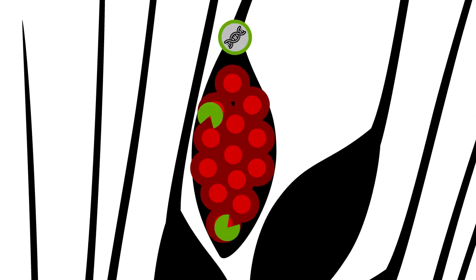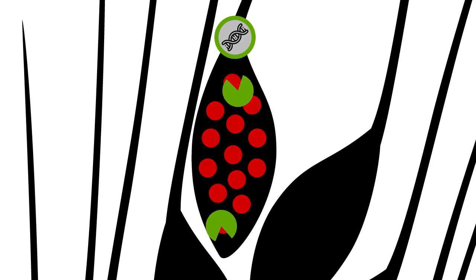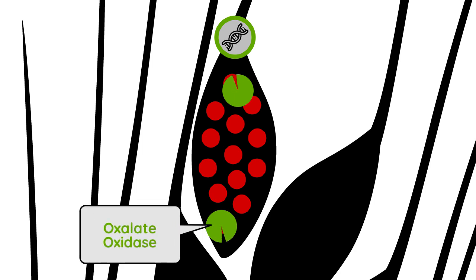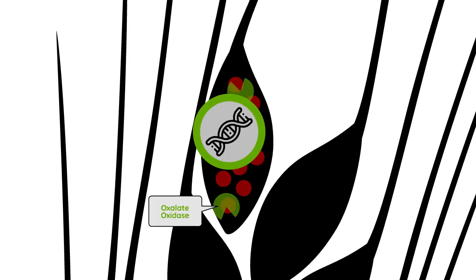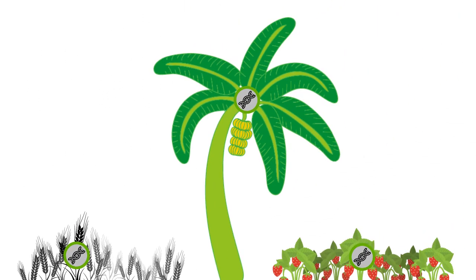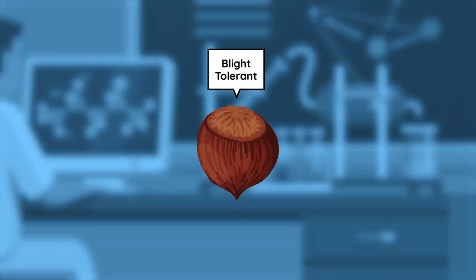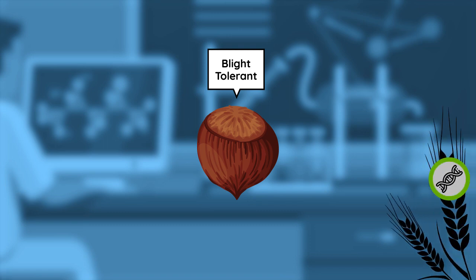Other plant pathogens also use oxalic acid to attack their host plants, so many plant species have evolved a mechanism to protect themselves from this acid. One such defense gene produces an enzyme called oxalate oxidase, which removes the acid without harming the pathogen. This gene is used by many plants including wheat, bananas, and strawberries.